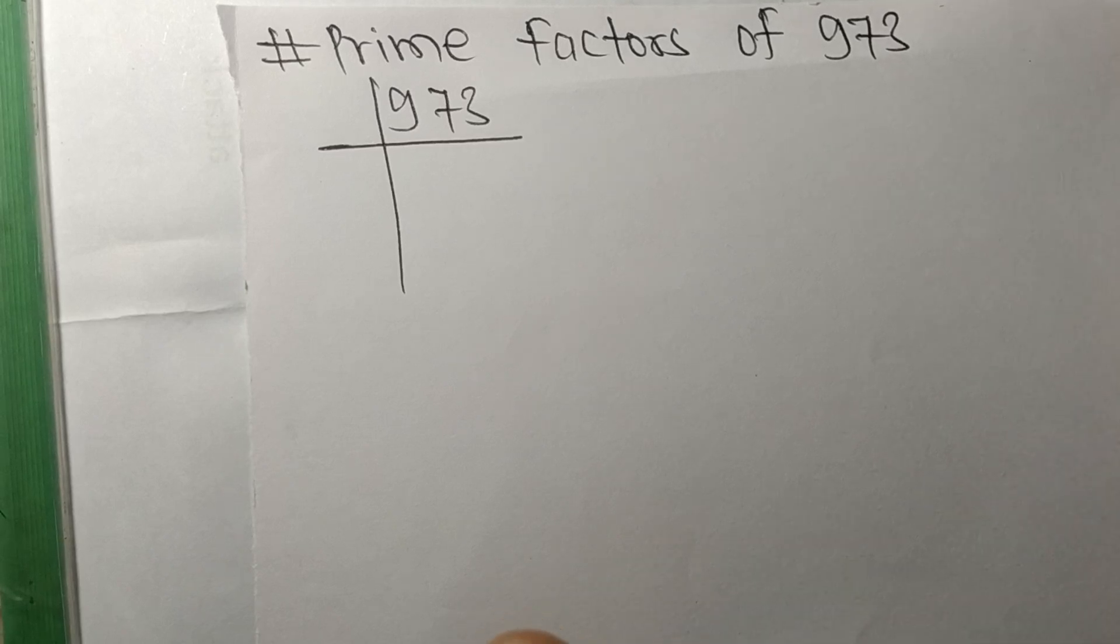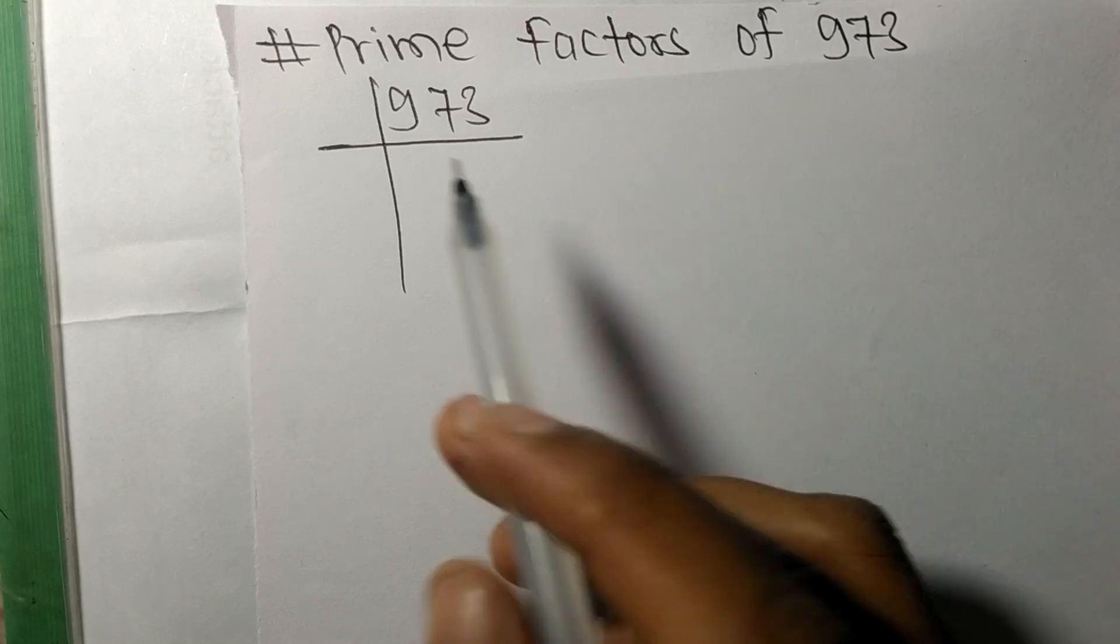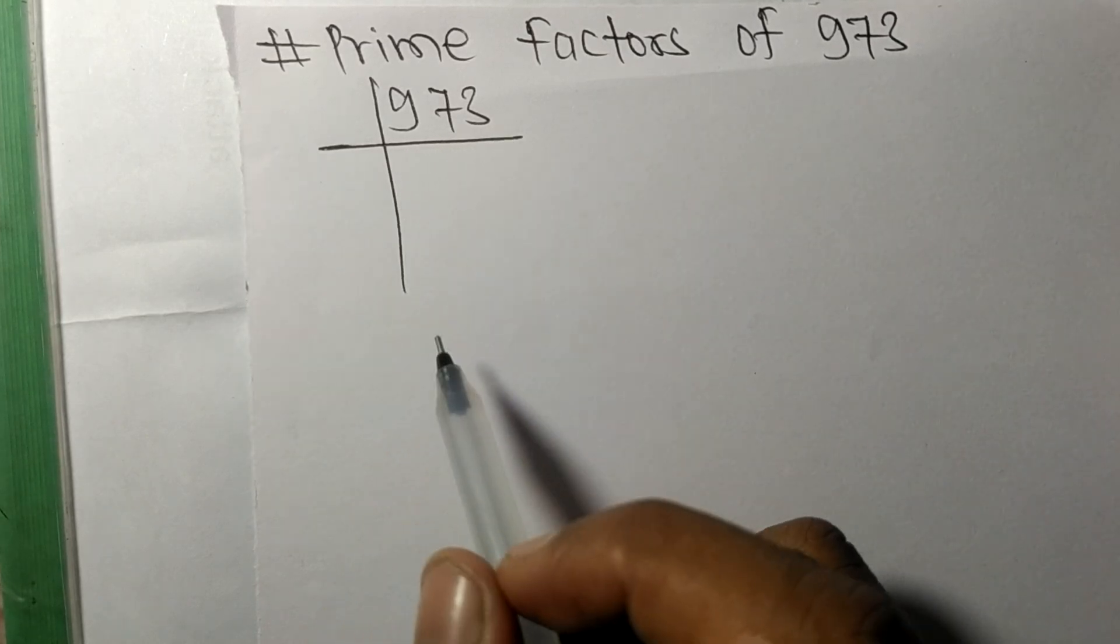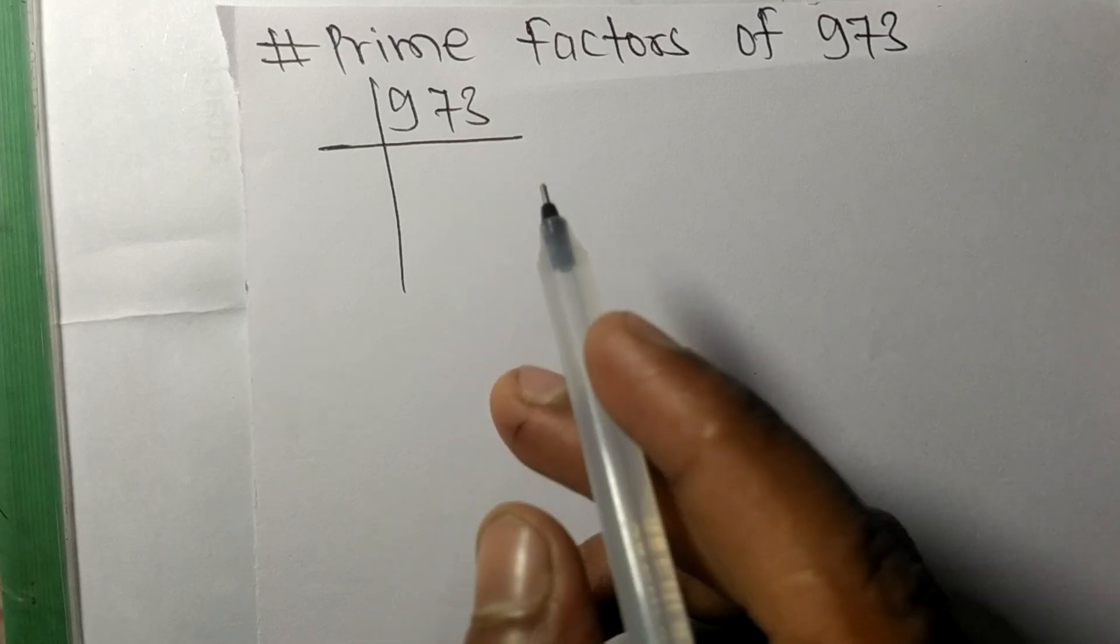Today in this video we shall learn to find the prime factors of 973. 973 is exactly divisible by 7.